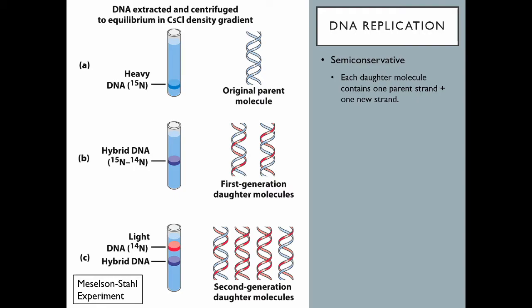The fact that they saw an intermediate band confirms that the first round of replication is semi-conservative. Then in the next round, with bacteria again grown in light nitrogen-14, the second generation showed two bands: one containing the hybrid DNA still carrying heavy nitrogen from the first generation, and one band of fully light DNA representing the new molecules. That experiment proved definitively that DNA replication is semi-conservative.